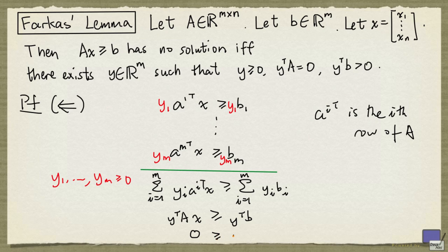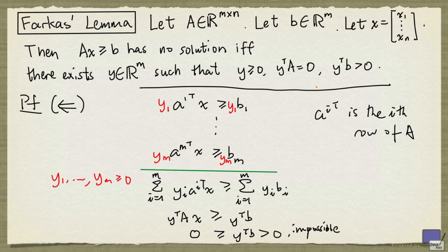And so we have 0 bigger than 0, which is impossible. So there's no way we can find x that satisfy these inequalities, if we have a y that satisfy this condition here.